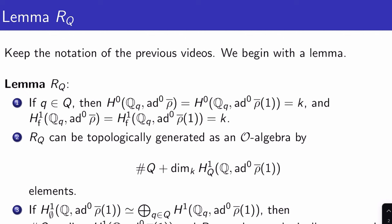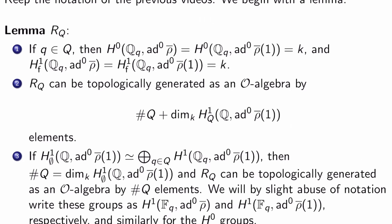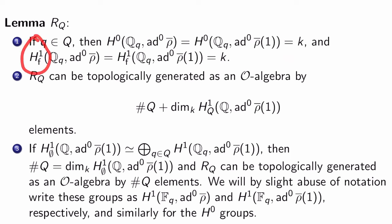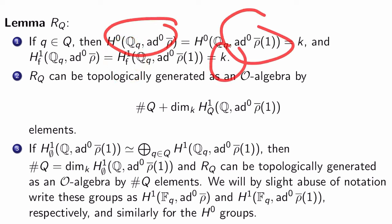We'll start with what I'll call Lemma RQ. Keep all the notation of the previous few videos — you might want to review. Lemma RQ says: if you take a set Q of primes all congruent to 1 mod L, and rho-bar is unramified at them, then for Q a prime in big Q, H^0(Q_q, ad^0 rho-bar) equals H^0(Q_q, ad^0 rho-bar(1)), the Tate twist, and both are just k.